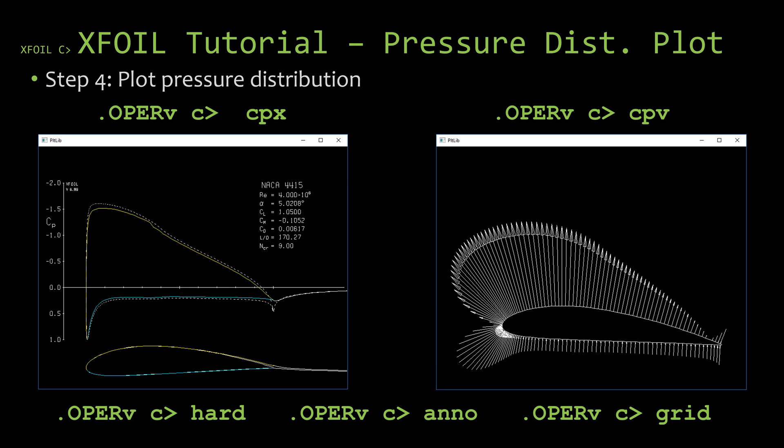And as mentioned before, you have some other options for this plot. You know, you might want to use the hard command to create a hard copy of it, which would just be a postscript file saved in the X-FOIL folder, the same folder where the dot exe file that you used to start X-FOIL, it's going to be in there. And then you have the anno where you can annotate the plot. We'll cover that in its own video. And then you have the grid as well, where you can put the grid on.